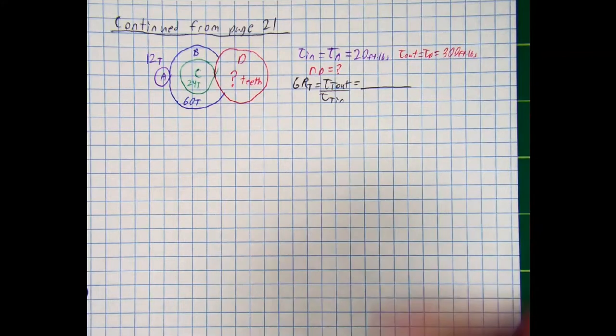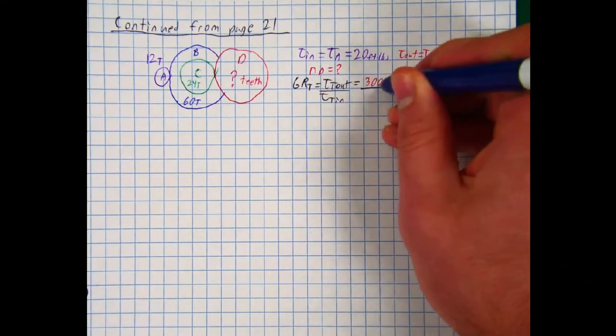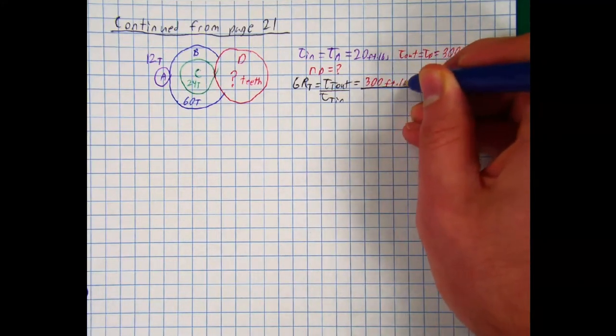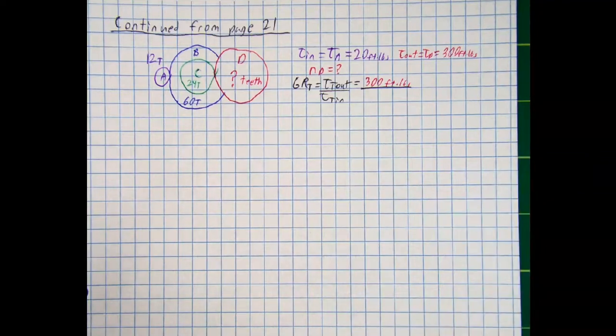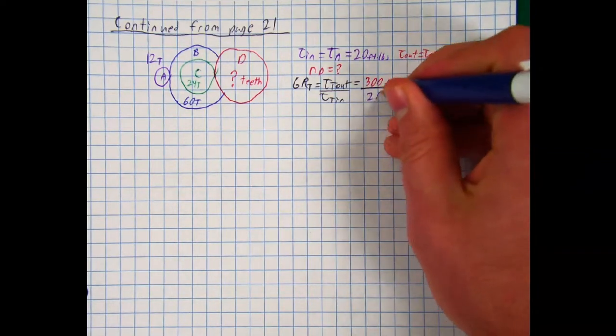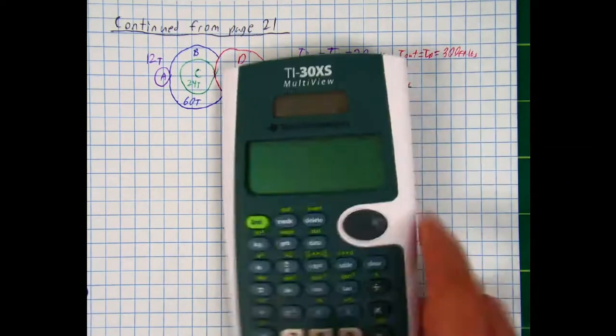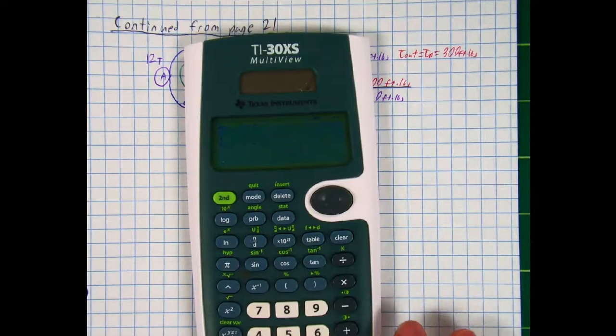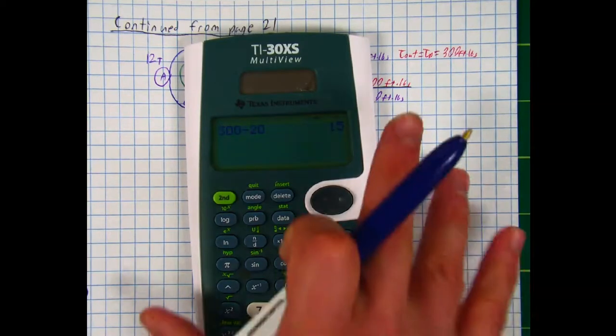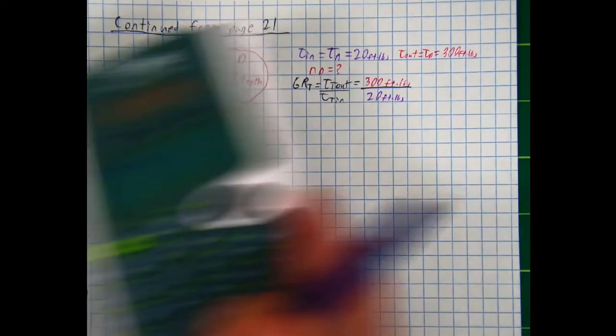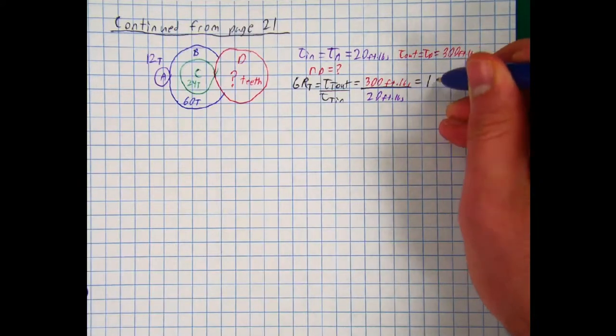Torque D is 300 foot-pounds. And then torque A, the torque input, is 20 foot-pounds. And what is 300 divided by 20? 300 divided by 20 would give me a total gear ratio of 15. So equals 15.